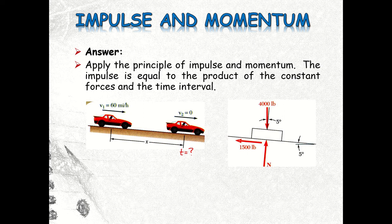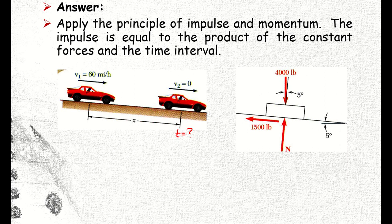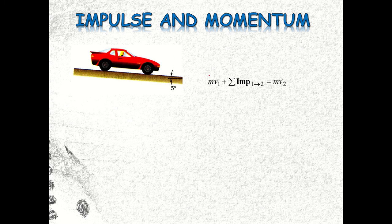Here is the free body diagram. We have the applied braking force, the normal force perpendicular to the incline, and the weight of the car. From the impulse-momentum formula: m·v1 plus the summation of impulses from 1 to 2 equals m·v2.